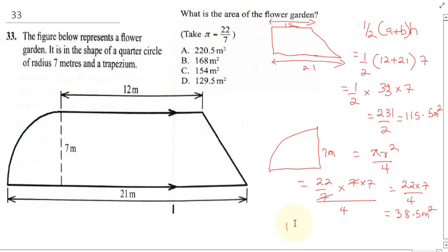So for us to get the area we'll sum up 115.5 plus 38.5. When you sum this up you're going to get 154 meters squared. So the correct answer here is going to be C.